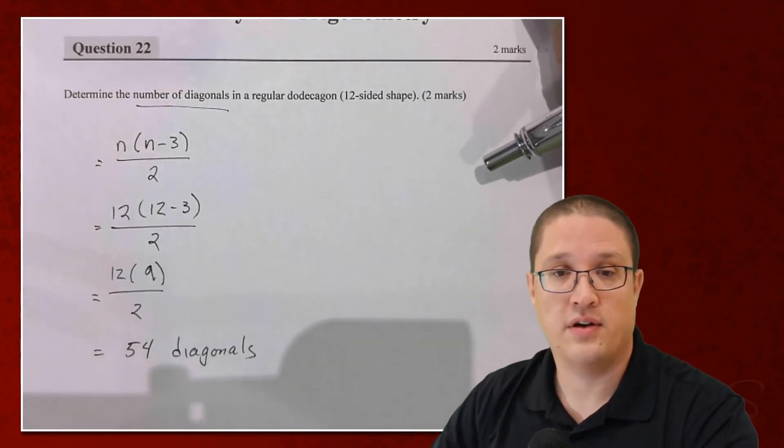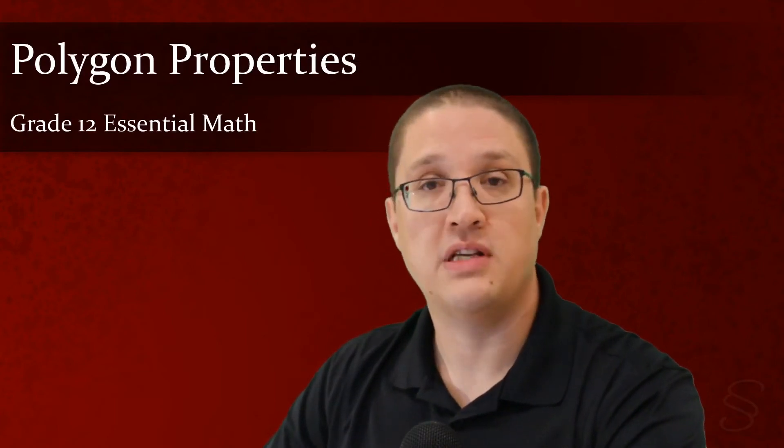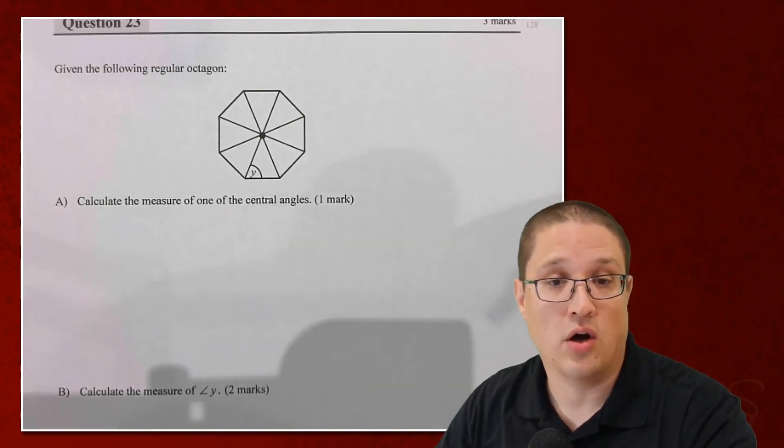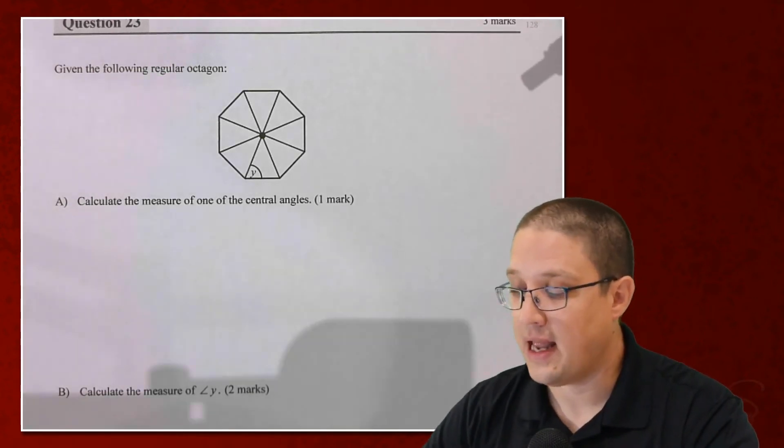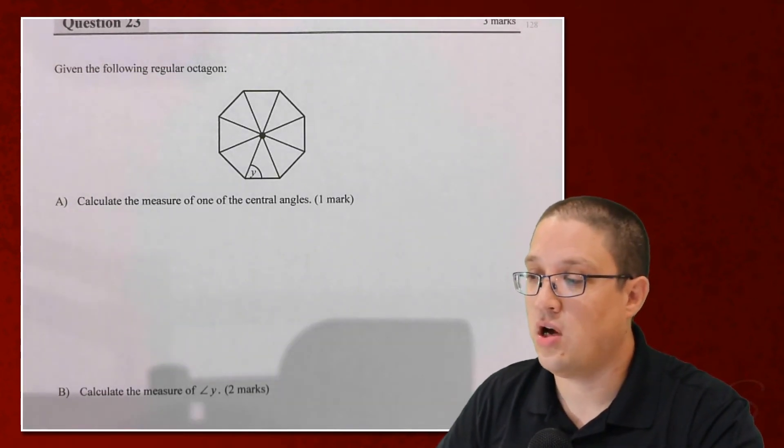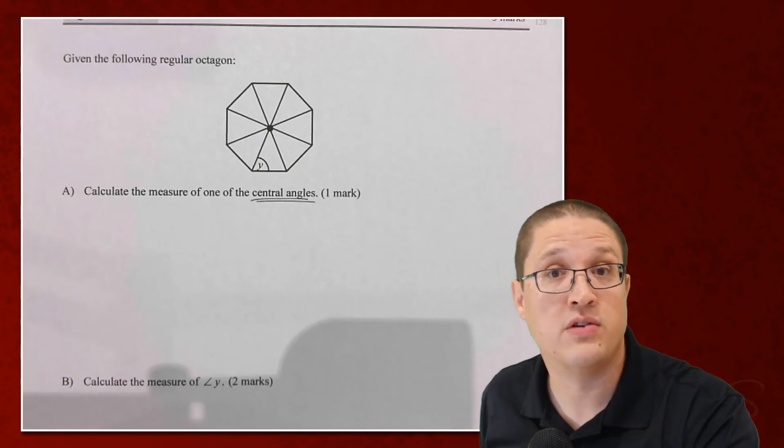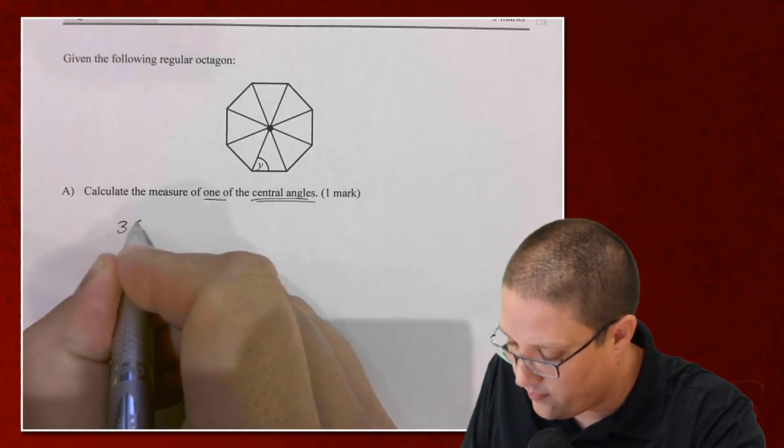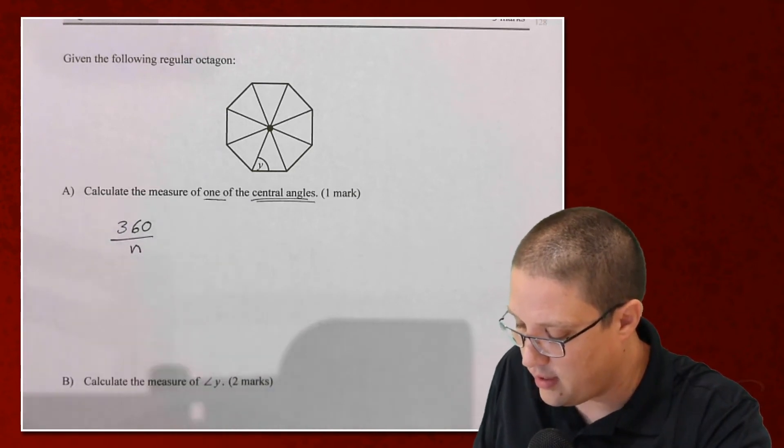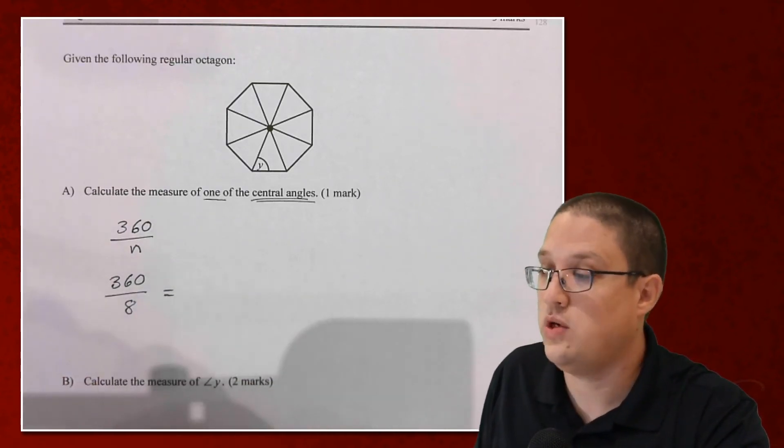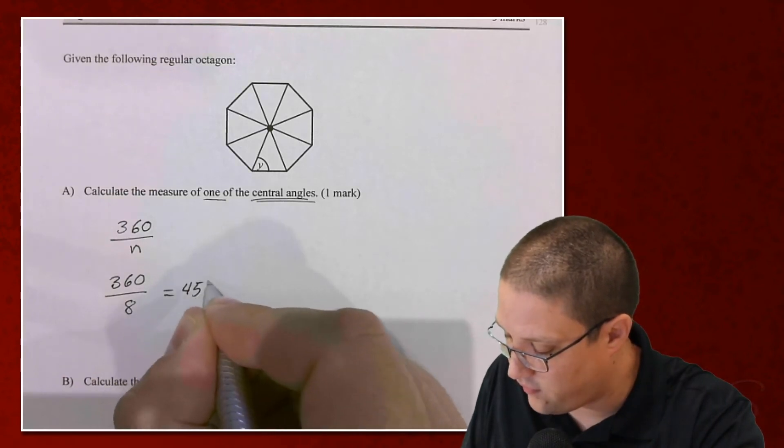So let's take a look at another example here. When we're looking at the properties of polygons, we also have central angles, and we also have internal angles that we can take a look at. So with these, let's look at this example. I've got this regular octagon, which looks like a stop sign. An octagon has eight sides. So with this octagon, we're saying, what's the measure of one of the central angles? Here I'm looking at central angles. That's going to tell me which formula I'm going to use. Now, one central angle, 360 divided by n. I'm going to do 360 divided by 8, which works out to 45 degrees.